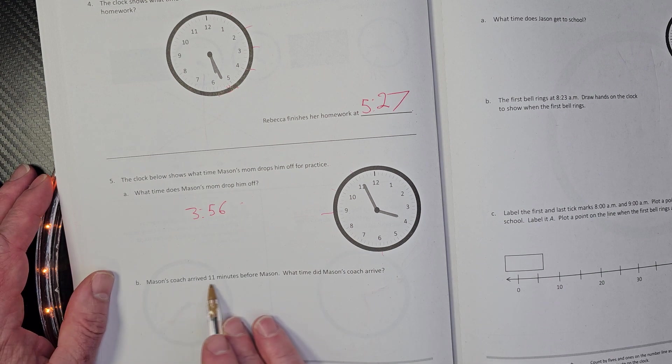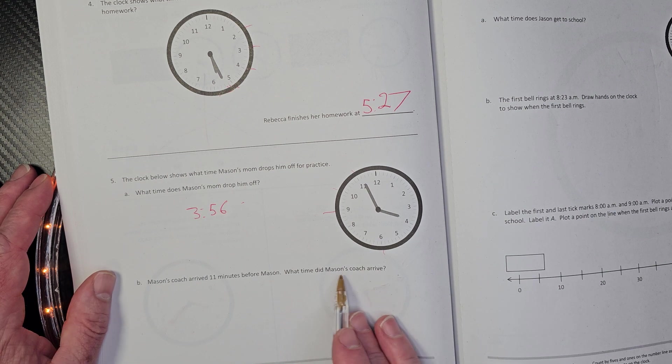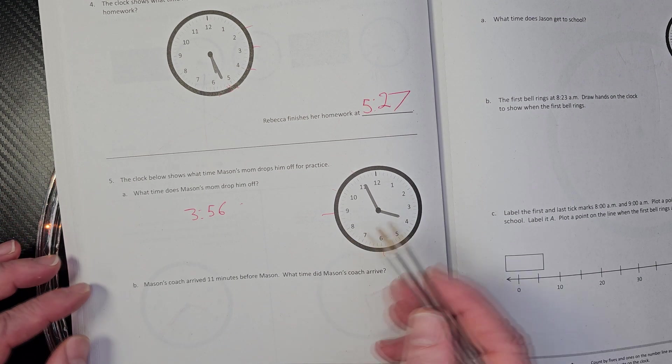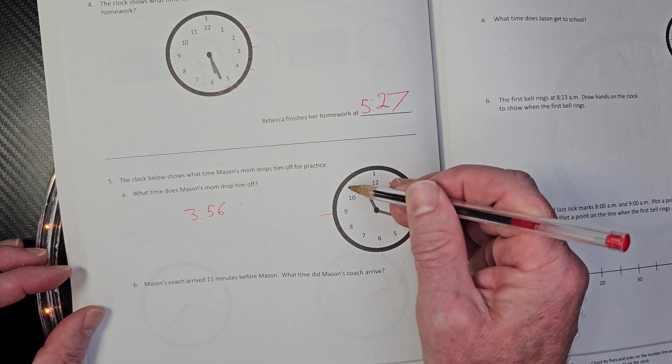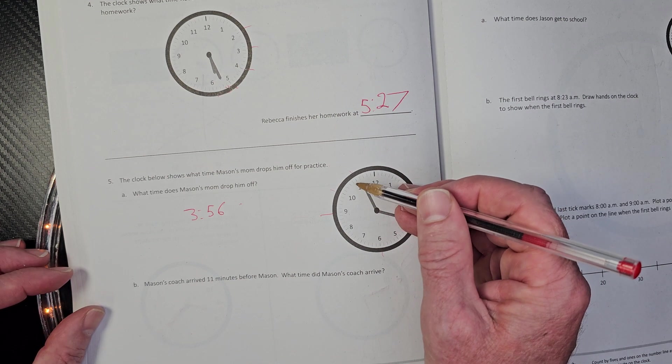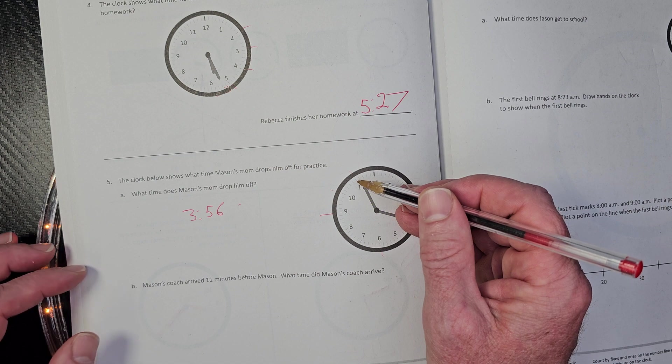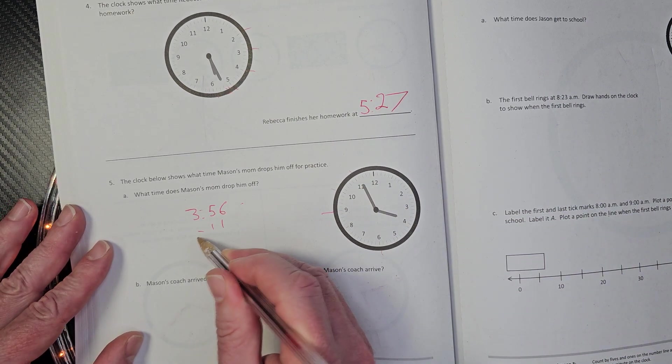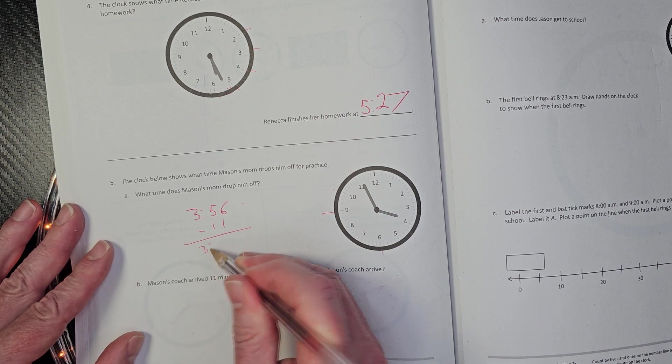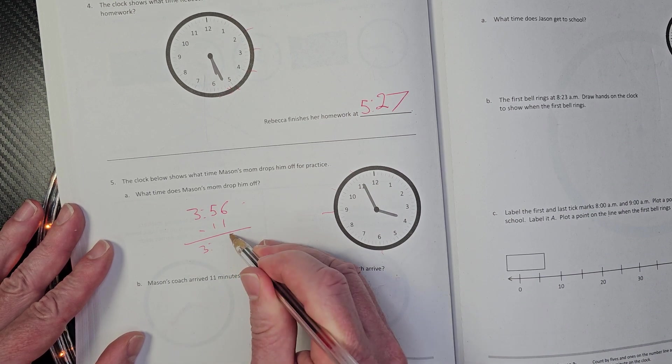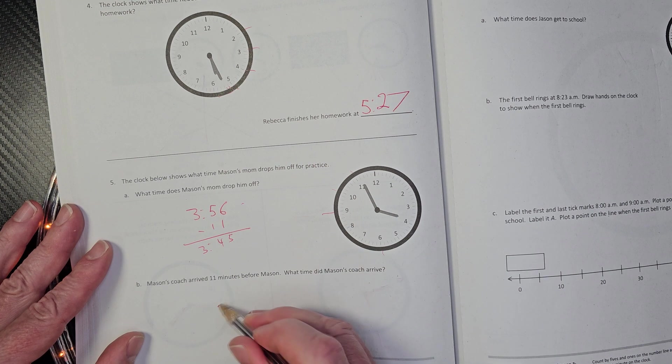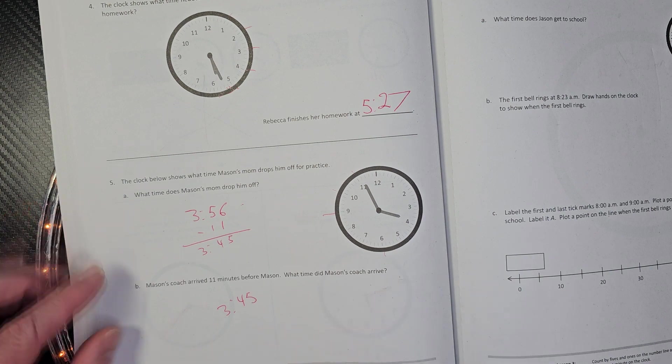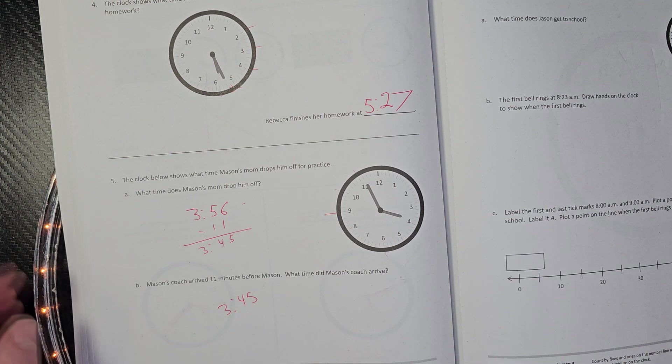Mason's coach arrived 11 minutes before Mason. What time did Mason's coach arrive? So there's a couple of different ways on how you could find that. You could go back 11 minutes. All right. So you could do it that way, or you could just do simple subtraction just like that minus 11. So that would be three and three 45. So the answer would be three 45. Okay. Just checking my work here.